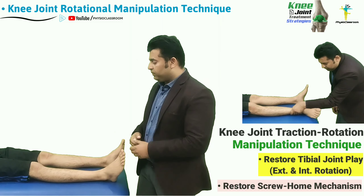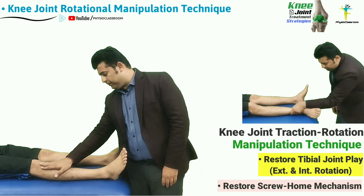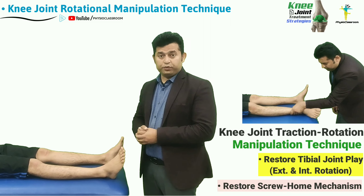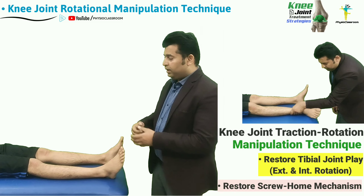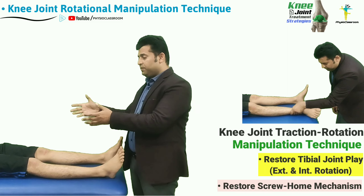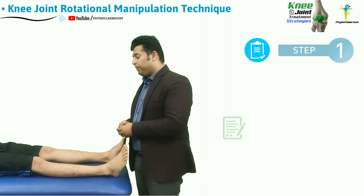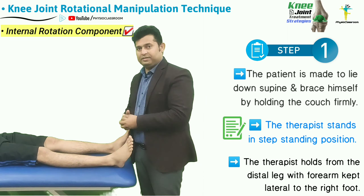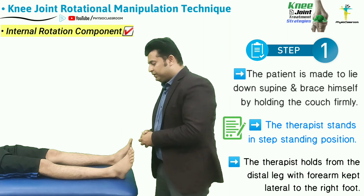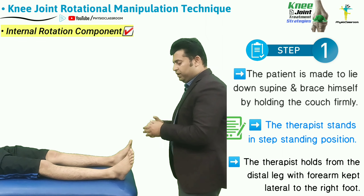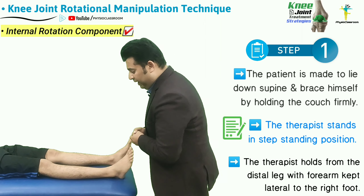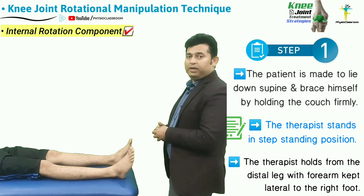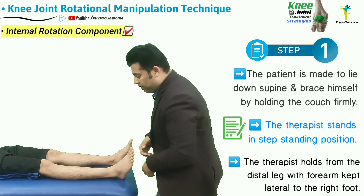One way to restore the tibial rotational joint play is to have the patient lie in the supine position. The therapist asks the patient to brace themselves by holding the edges of the treatment table on both sides. The therapist stands with the dominant foot behind — left leg forward and right foot back.